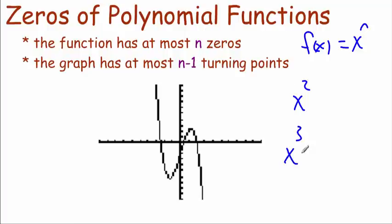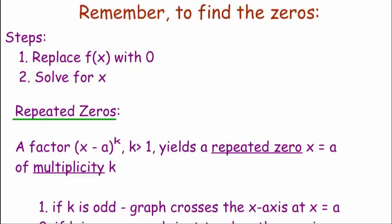Something like x cubed could have three zeros and two turning points. x to the fourth could have four zeros and three turning points. To find the zeros of a function, we replace f(x) with zero — so we get zero equals whatever our function is — and then we solve for x.